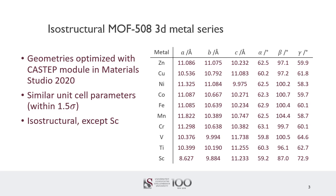The metal series investigated consists of isostructural metal organic frameworks. Optimized geometries were obtained with the CASTEP module for each structure, employing a full unit cell optimization. Similar unit cell parameters were obtained within 1.5 standard deviations, except for scandium, which confirms the isostructurality of the series. Although scandium does not fit into the isostructural series, it was still included for completeness.